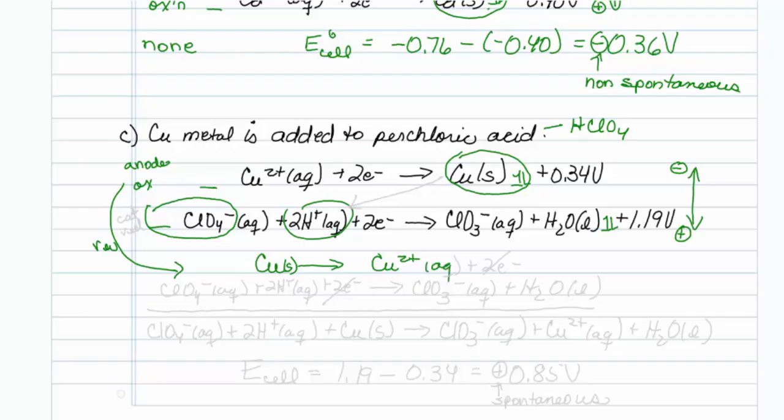I have my perchlorate, I'll write that as is, plus 2 H1+, plus 2 electrons, going to my ClO3-, plus H2O liquid.